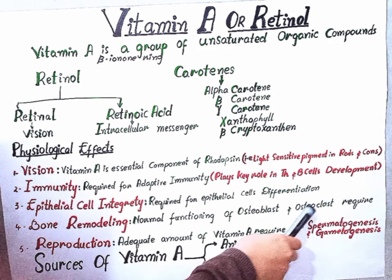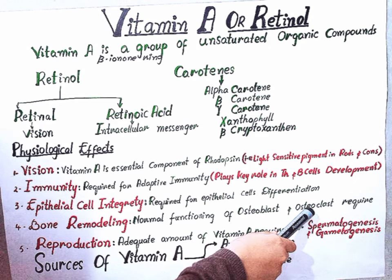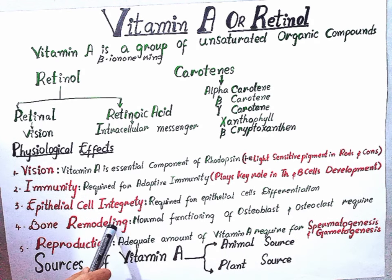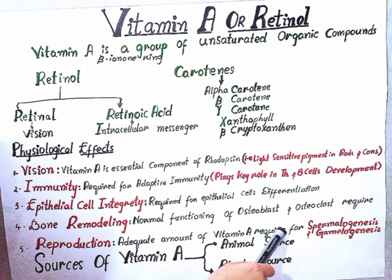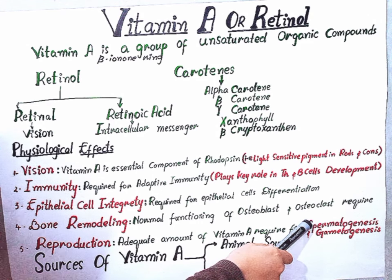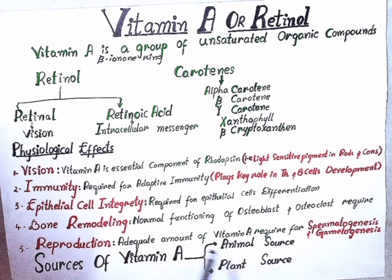For bone remodeling, normal functioning of osteoblasts and osteoclasts requires Vitamin A. These two cell types are the most important in bone developmental processes and both require adequate Vitamin A.